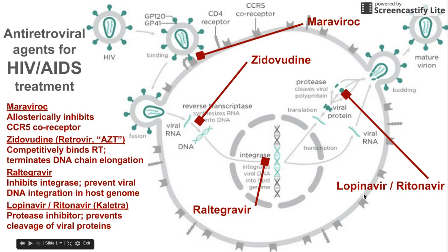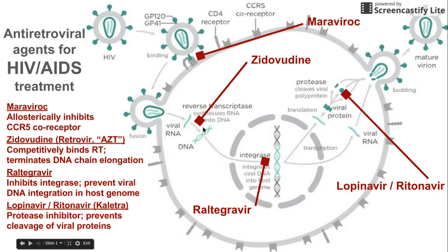So one more time, the antiretroviral agents we use for HIV and AIDS treatment are: Maraviroc, which blocks one of the co-receptors for binding and entry into the cell; Zidovudine, which blocks reverse transcriptase and the process of converting RNA to DNA; Raltegravir, which blocks integrase activity and prevents incorporation of that DNA into the host cell genome; and the combination of Lopinavir and Ritonavir, which block protease activity and essentially prevent the assembly of a new virus before it's released out of the cell. Thanks for listening.